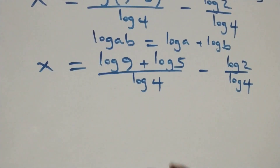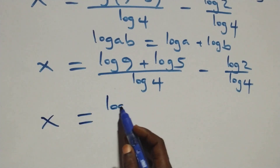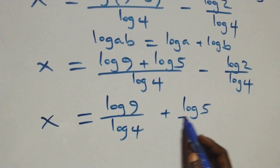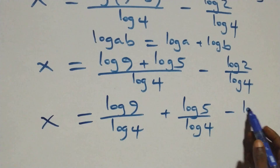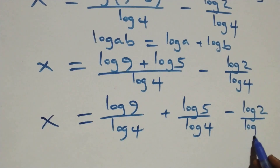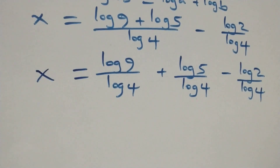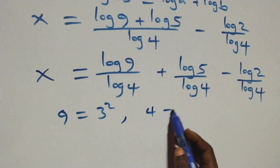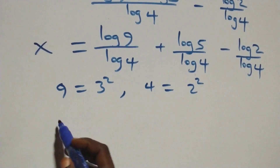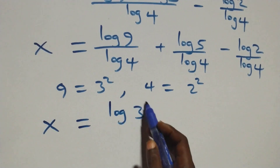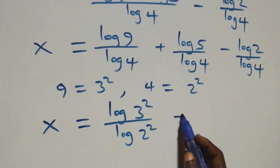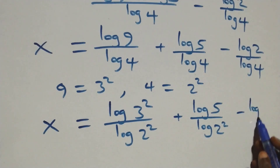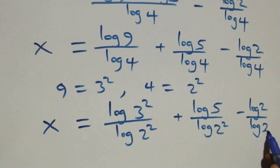We separate into two fractions: x equals log 9 over log 4, plus log 5 over log 4, minus log 2 over log 4. We then rewrite 9 as 3 squared and 4 as 2 squared, giving x equals log(3²) over log(2²), plus log 5 over log(2²), minus log 2 over log(2²).